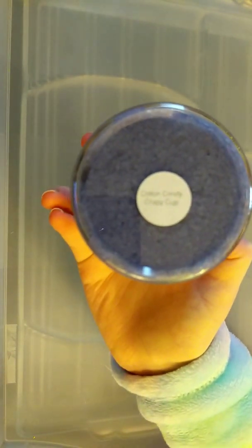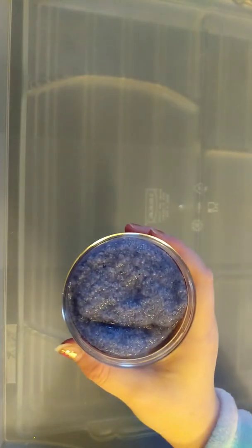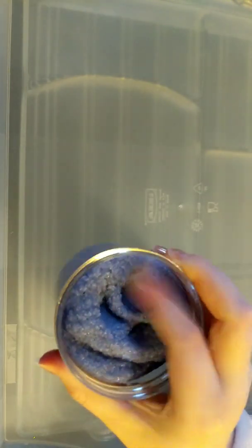You can see a little kind of dots in it. So, this is Cotton Candy Crispy Cup. It's not really focusing. Okay. So, here it is inside. You can see there are these little kind of bits in it. It's really soft.